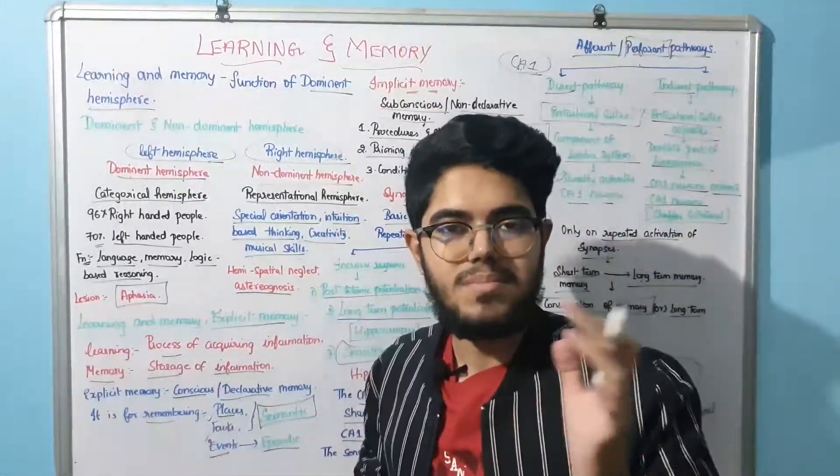To summarize implicit memory: procedural and skill memory is handled by the basal ganglia; priming memory is for the neocortex; and conditioning memory involves the amygdala or cerebellum.